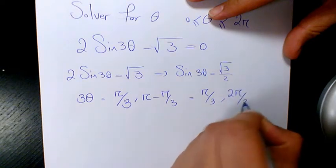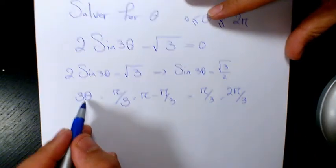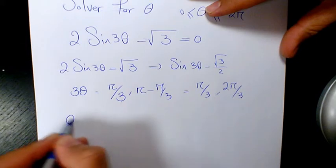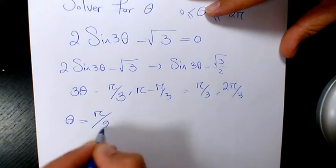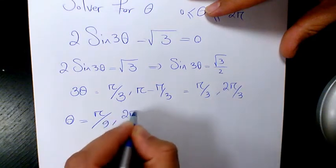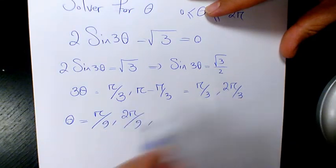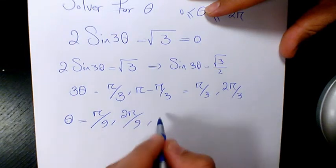Then when you divide it by 3, because that's 3θ, that's going to be π over 9, 2π over 9.